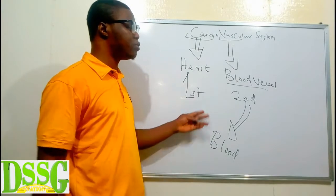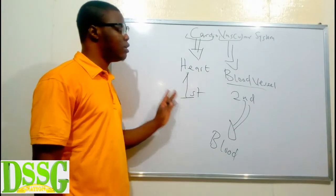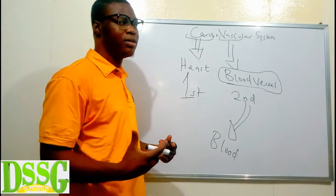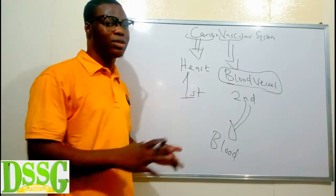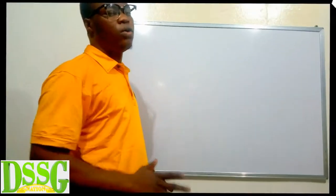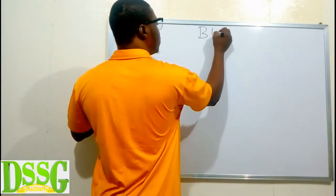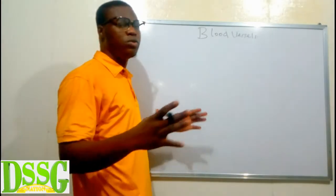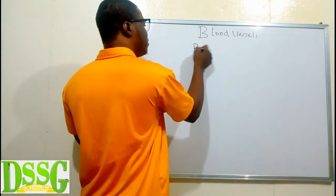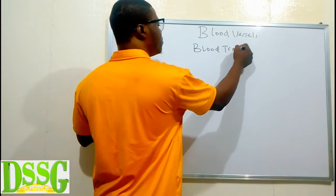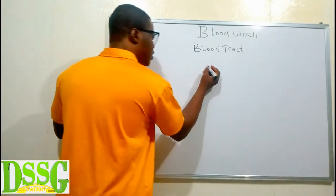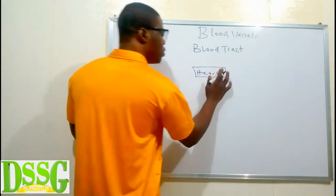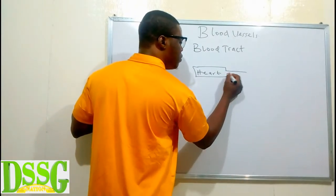Those are the three things we are going to be talking about in the cardiovascular system. Let's start with the blood vessels. For us to have a better understanding of blood vessels, let me explain the blood tract. The blood tract is the path of the blood. Let's say we have the heart here — some kind of blood vessel is going to take the blood away from the heart.